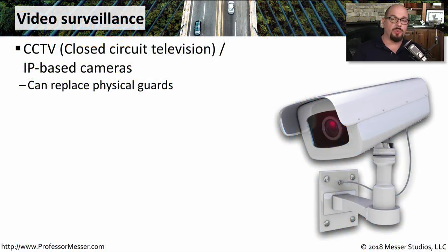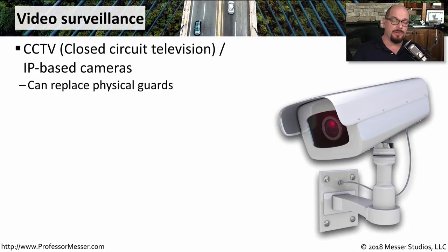Many organizations will add physical security in the form of video surveillance. You may see these referred to as CCTV cameras, which are closed circuit television. These are often coax-connected devices. These days, it's more common to use IP-based cameras that can communicate across the network over ethernet connections.